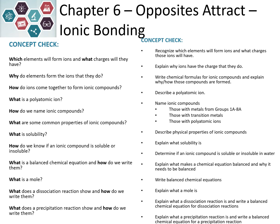We're also going to name those ionic compounds and talk about polyatomic ions — many atoms that come together to form a charged species. We're going to talk about some of the properties, including solubility, which is whether or not it dissolves in water, and how we know if an ionic compound is soluble or insoluble.